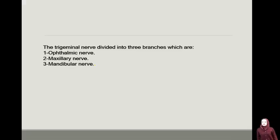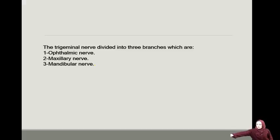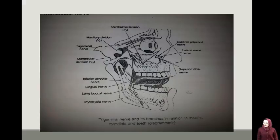The trigeminal nerve divides into three branches: number one, the ophthalmic nerve; number two, the maxillary nerve; number three, the mandibular nerve. This is the trigeminal nerve and its branches in relation to the maxilla, mandible, and teeth.